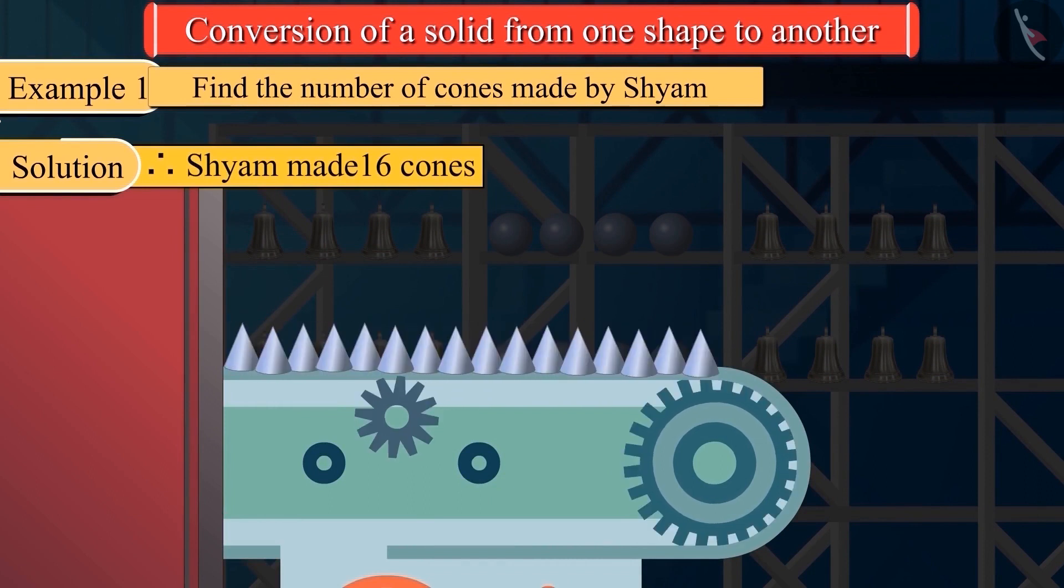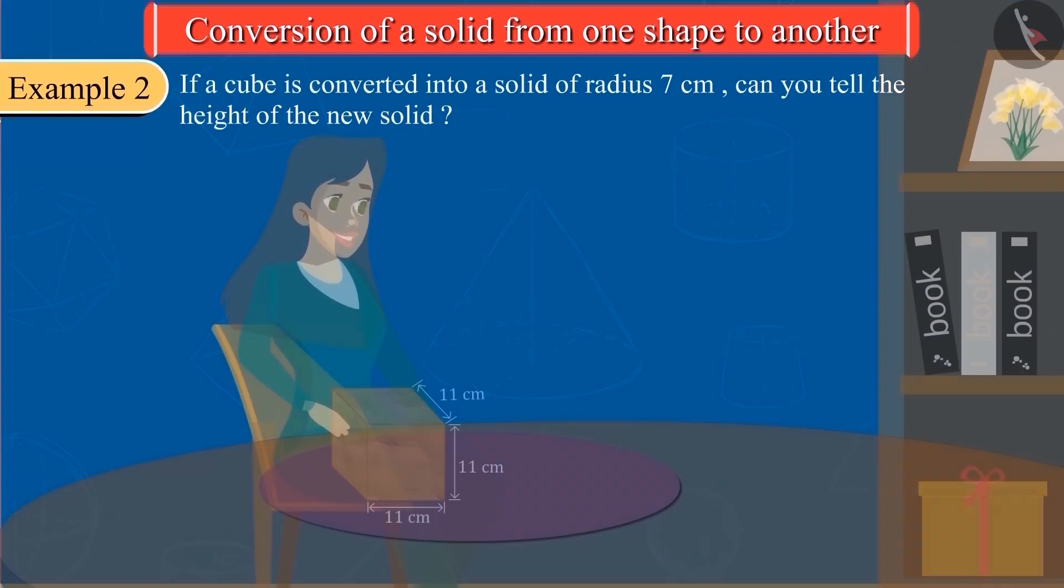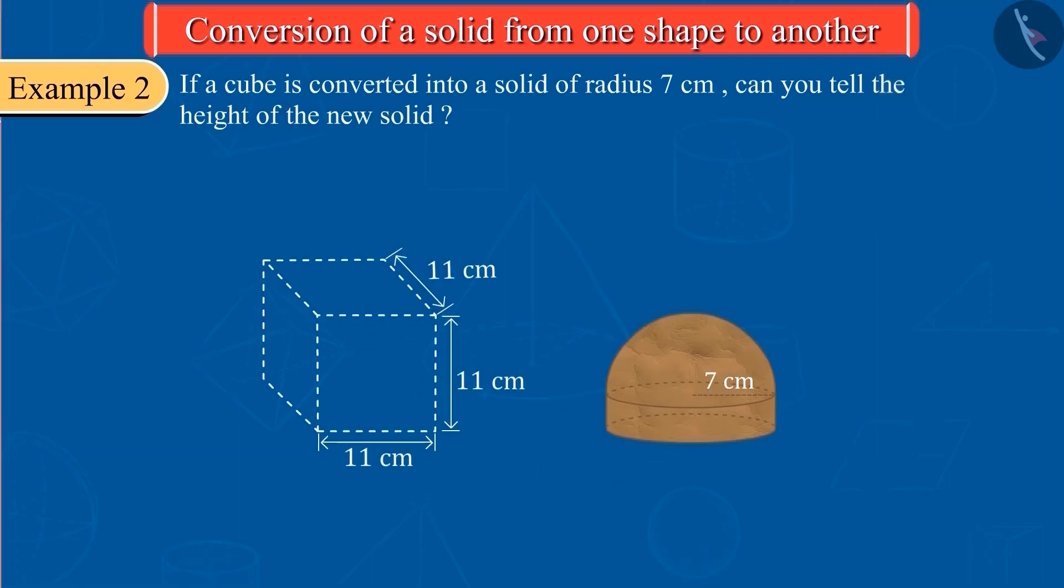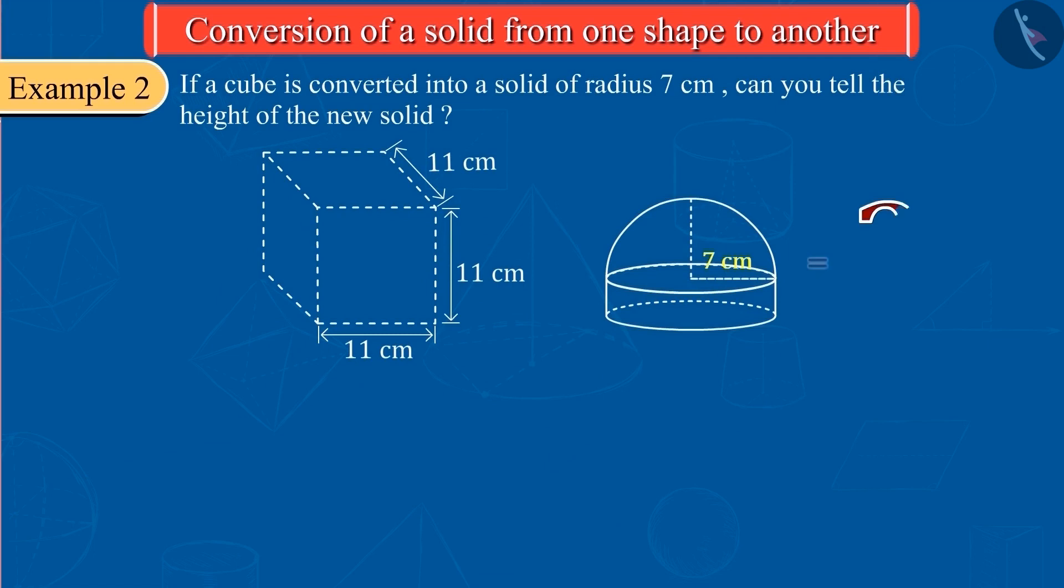Let's look at another example. This cube is made of modeling clay. Sanjana transforms this solid into another solid with a radius of 7 cm. Can you calculate the height of this solid?